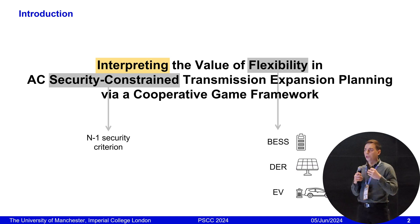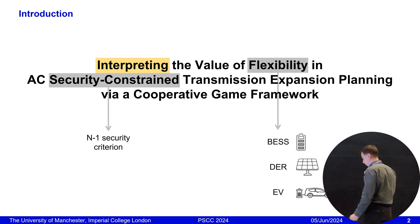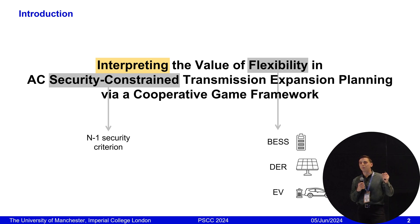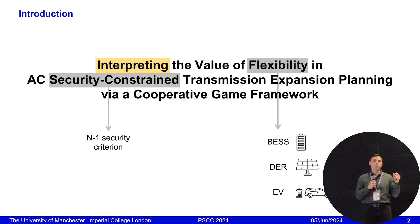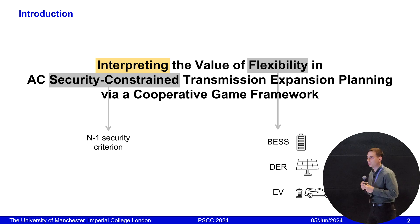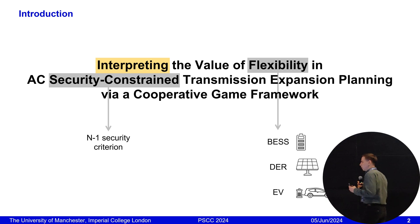Before jumping into the simulations, I think it's beneficial to talk about the context of the problem. What do we mean by flexibility? We mean new emerging resources in power systems that have the technical ability to exchange power with the grid, such as battery energy storage systems, various demand response programs, TSO/DSO coordination, and so on. And we are considering planning of such resources for transmission systems.